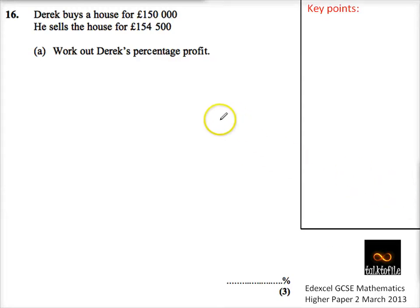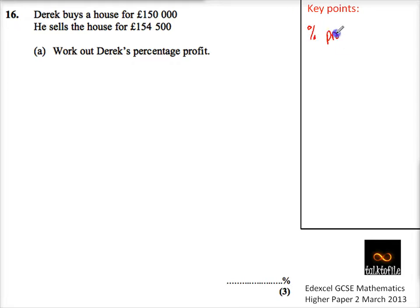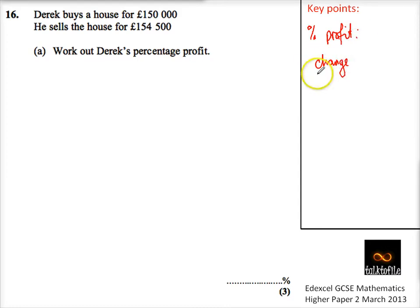Question number 16. This is a percentage question, so we need to work out a percentage profit. One way I use to remember percentage profit is the formula where it's the change — whether it's gone up or down — divided by the original. So the change is a fraction of the original, times by 100 to turn it into a percentage.